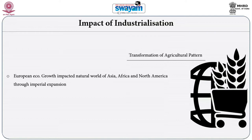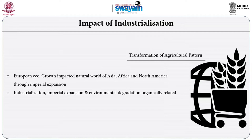Colonial expansion resulted in acquisition of new territories from which resources could be extracted. While industrial revolution increased extraction of resources, colonial expansion facilitated acquiring new lands, new markets, and new resources to be used in the production process. Guha argues that industrial revolution, colonial expansion, and environmental degradation are intrinsically related. These three social processes share an organic relationship.